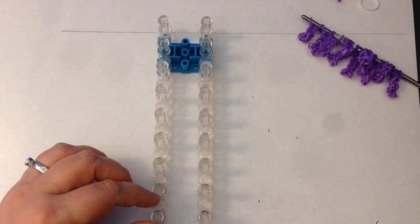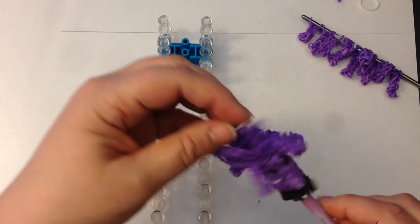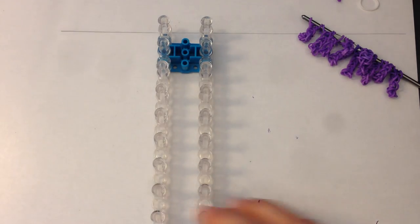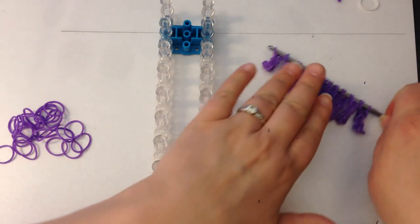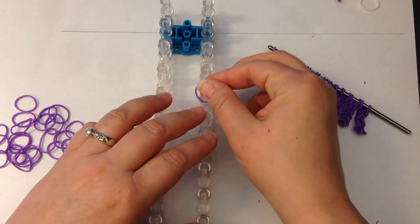Now, we're going to start with making his hair and you're going to need 12 of these little single chains and they're each five long. Now, you can see I have 11 here waiting. I'll show you how to make them.